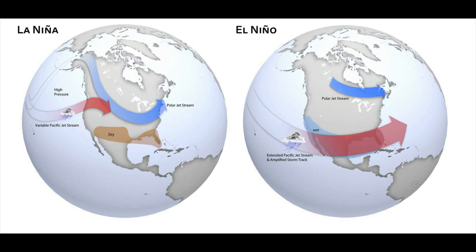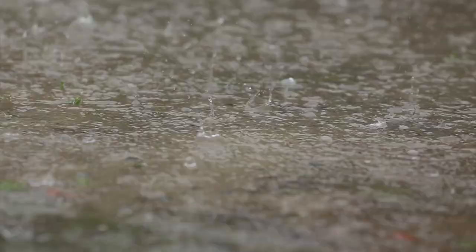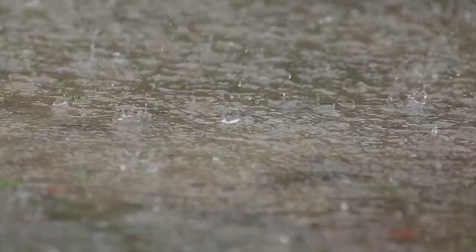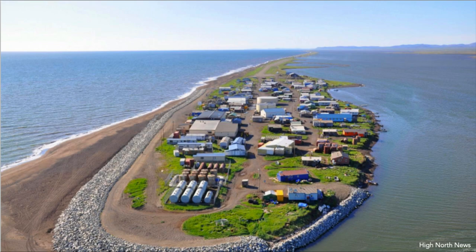El Niño and La Niña have global impacts on weather, wildfires, ecosystems, and economies by changing food abundance across the planet. These conditions typically last 9 to 12 months, but lately they've been lasting for years. They don't have a regular pattern, so scientists have to closely monitor water temperatures. Right now we're leaving a La Niña, which has meant terrible drought in the southern U.S., and going into an El Niño, which means lots of rain. When these patterns vacillate so much, what does that mean for plants and everyone who depends on them?